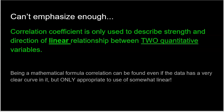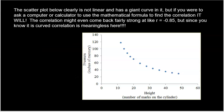Just a couple more things. I can't emphasize this enough: correlation coefficient r is only used to describe the strength and direction of a linear relationship between two quantitative variables. Because it's a mathematical formula, a correlation can be found even if the data has a very clear curve in it — but it's only appropriate to use if the relationship is somewhat linear. The formula will just take a bunch of X's, a bunch of Y's, find their Z-scores, multiply them, do some division, and spit out a number. So even if you see a clear curve, you might get a correlation, but don't use it.